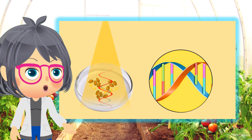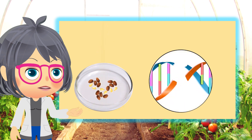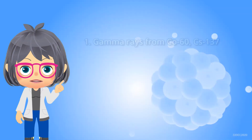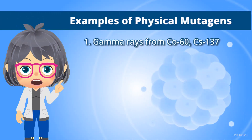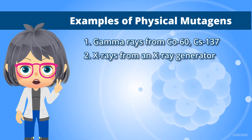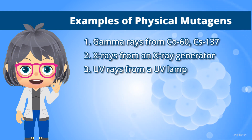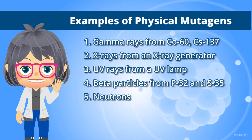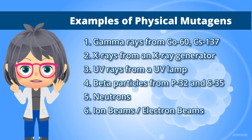Examples of physical mutagens are: one, gamma rays from cobalt-60 and cesium-137; two, X-rays from an X-ray generator; three, UV rays from a UV lamp; four, beta particles from phosphorus-32 and sulfur-35; five, neutrons; and six, ion beams or electron beams.